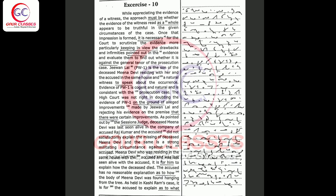Once that impression is formed, it is necessary for the court to scrutinize the evidence more particularly keeping in view the drawbacks and infirmities pointed out in the evidence and evaluate them to find out whether it is against the general tenure of the prosecution case.